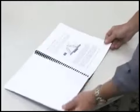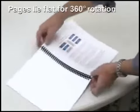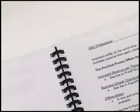ProClick lets pages turn easily and lie flat for easy note-taking and photocopying. 360-degree rotation allows pages to be completely wrapped around.